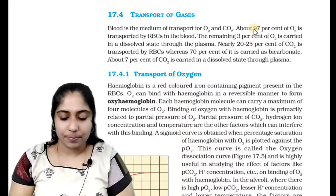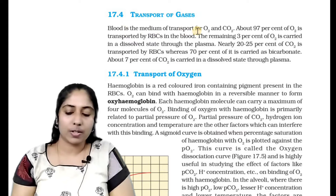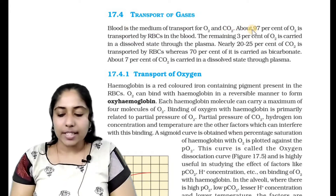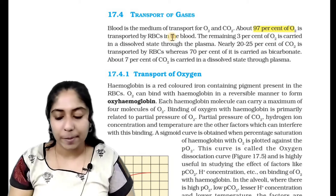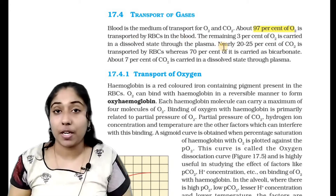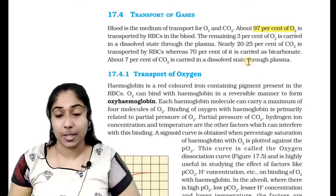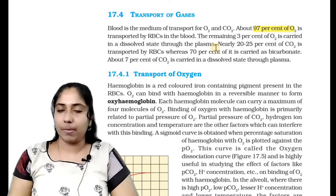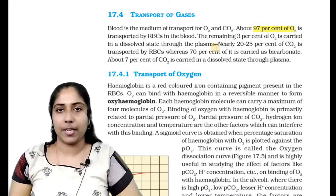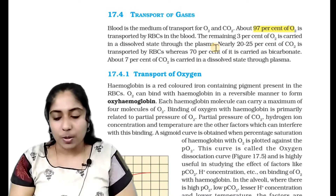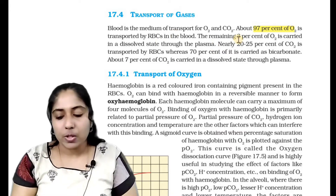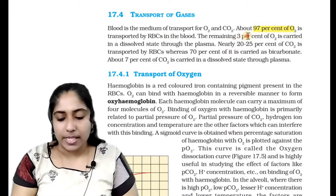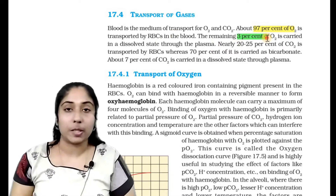Blood is the medium of transport for oxygen and carbon dioxide. About 97% of oxygen is transported by RBCs in the blood — carried by hemoglobin. The remaining 3% of oxygen is carried in a dissolved state through plasma.